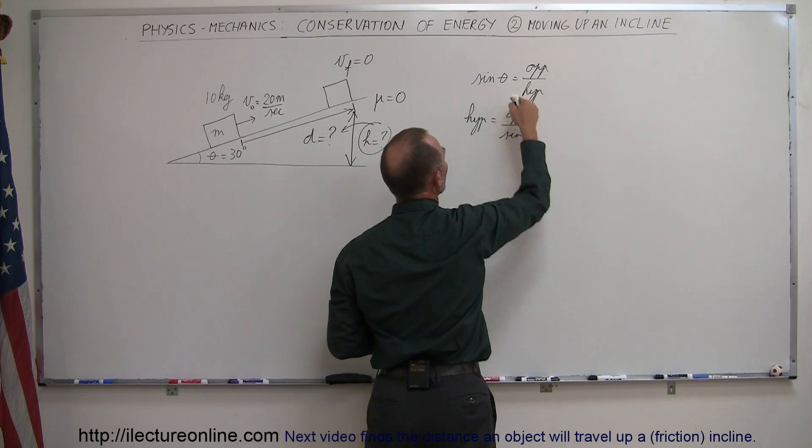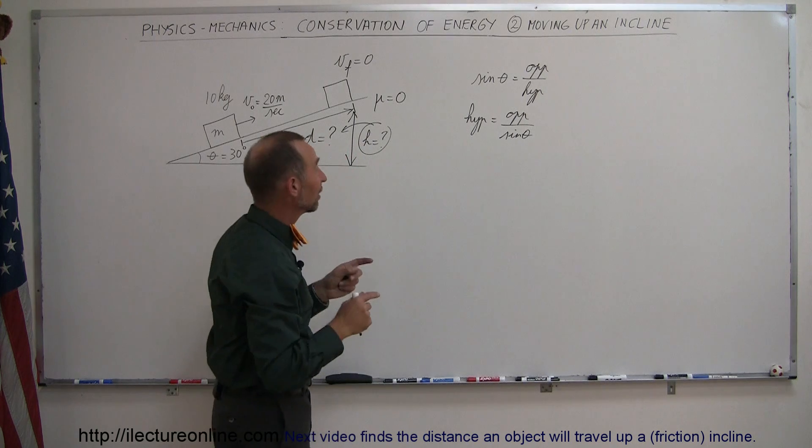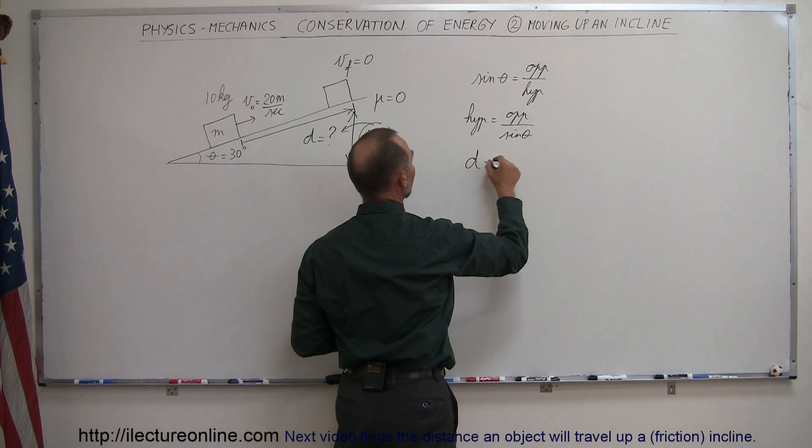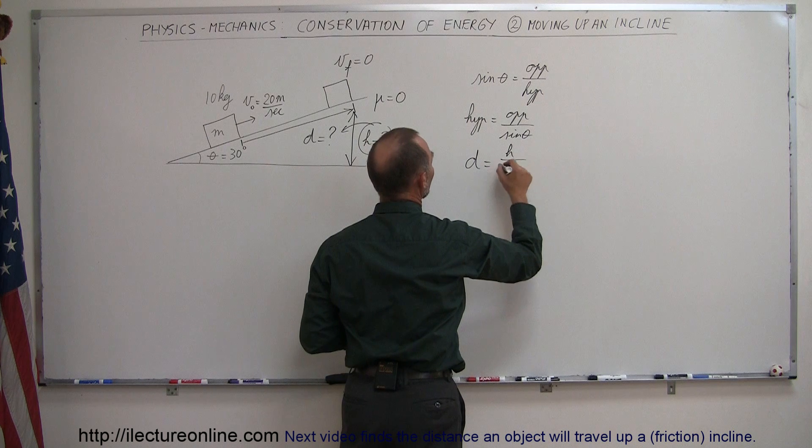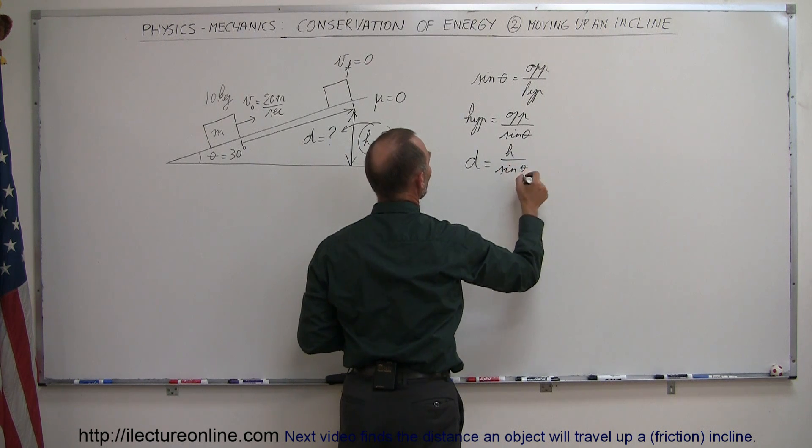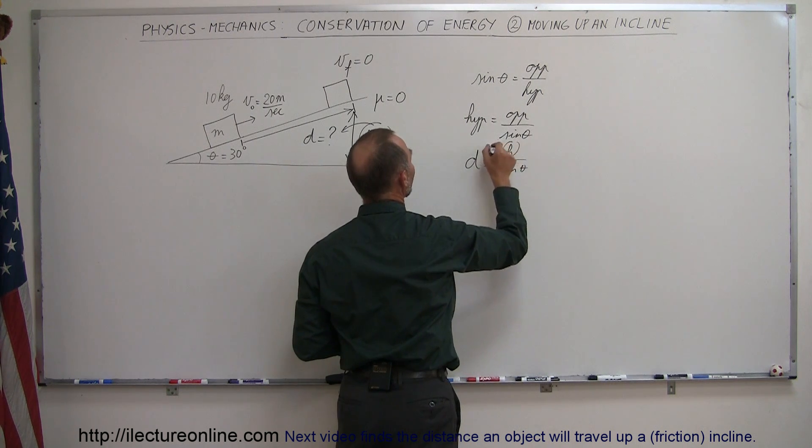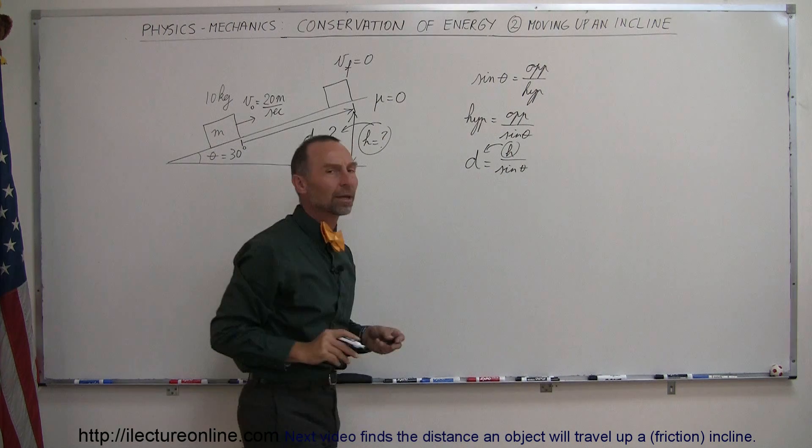When I exchange these two, and of course if I plug in what these are, the hypotenuse is the distance traveled, the opposite side is h, and of course that'd be the sine of theta. So once we find h, we'll find d by using this relationship right here.